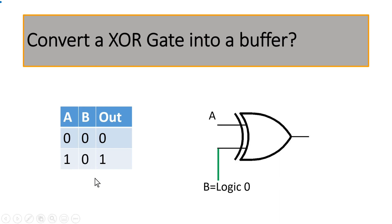If you tie one of the inputs of the XOR gate to logic 0, then this circuitry will start acting as a delay buffer. So the value of A will be passed at the output of this XOR gate, and it is quite clear from its truth table, as I have tied the value of B to logic 0.